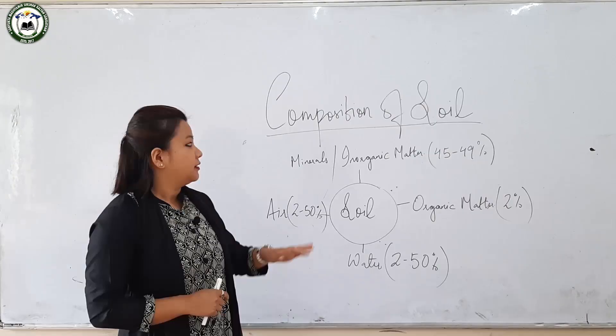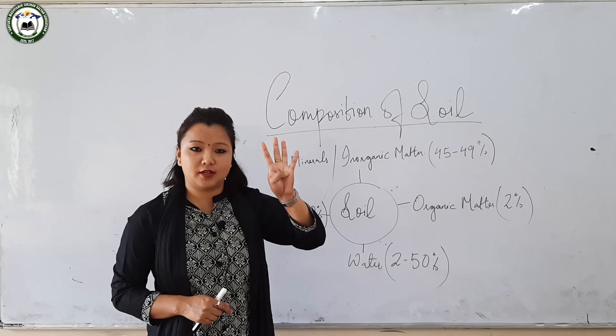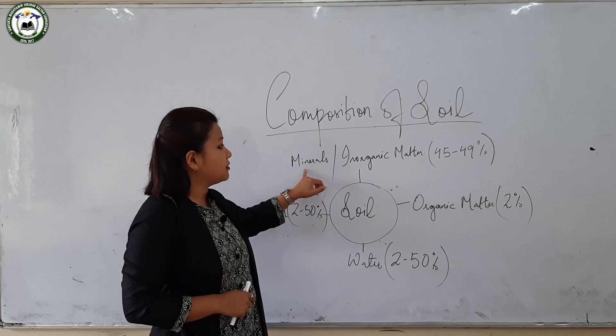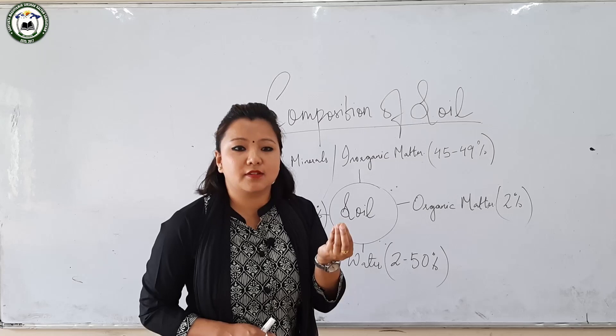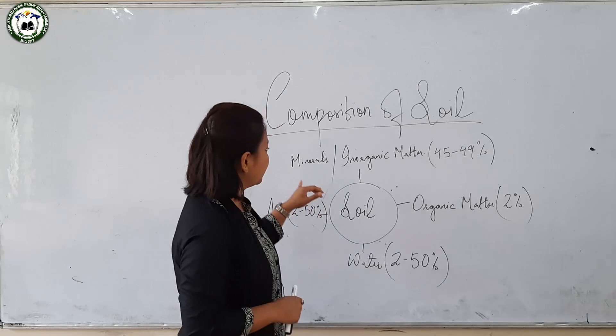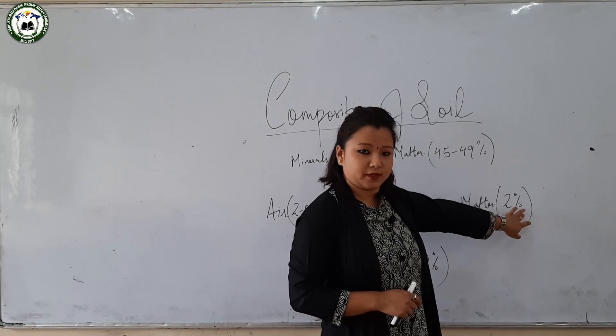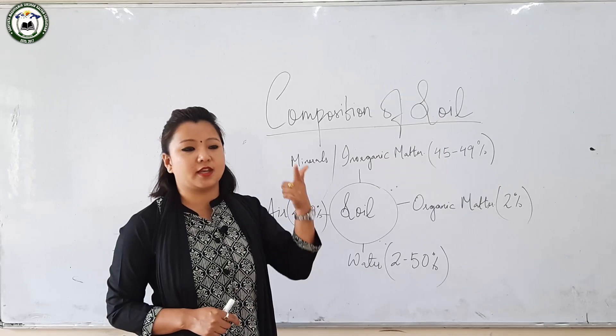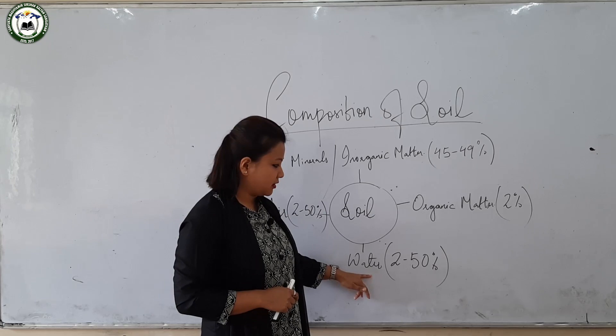Coming to the composition of soil: soil is mainly comprised of four major elements. The first is minerals and inorganic matter, comprising about 45 to 49 percent — these are the disintegrated or weathered rock particles. The second is organic matter, comprising about 2 percent. This organic matter adds humus or richness to the soil through the decomposition of plant remains and animal extracts. The third element is water, comprising about 2 to 50 percent.